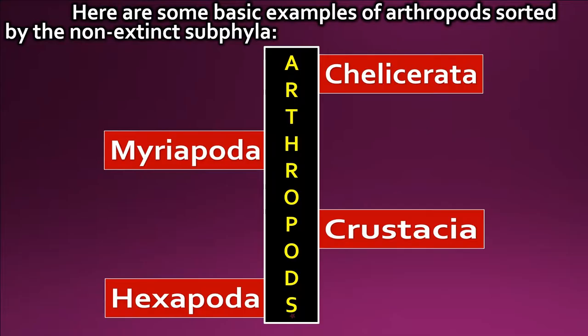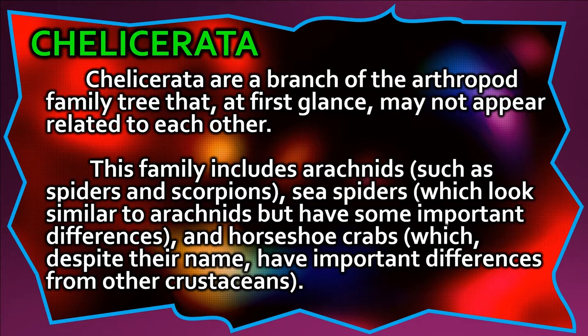Here are some basic examples of arthropods sorted by the non-extinct subphyla: Chelicerata, Myriapoda, Crustacea, and Hexapoda. Chelicerata are a branch of the arthropod family tree that, at first glance, may not appear related to each other. This family includes arachnids such as spiders and scorpions, sea spiders, and horseshoe crabs — which, despite their name, have important differences from other crustaceans.